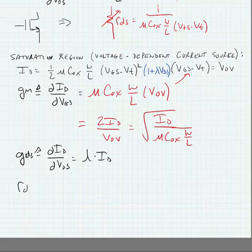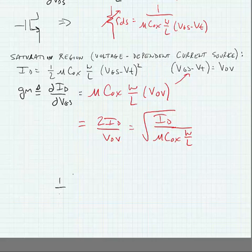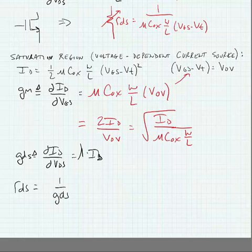The output resistance, RDS, then, would just be equal to 1 over GDS, which is equal to 1 divided by Lambda times ID.